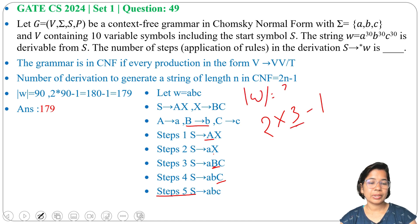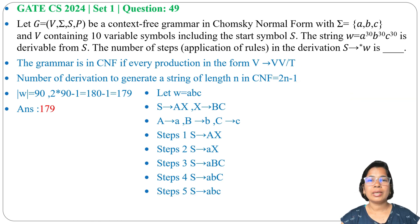2 into 3 minus 1 = 5. Yes, this formula is valid. So here, answer is 179.